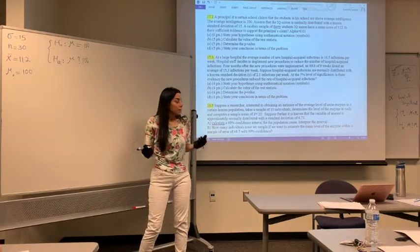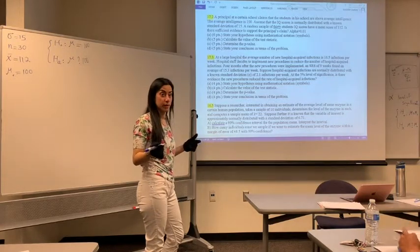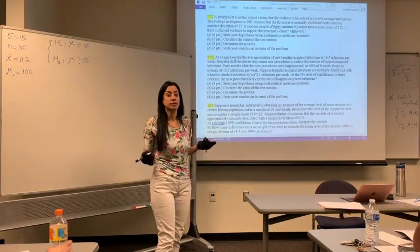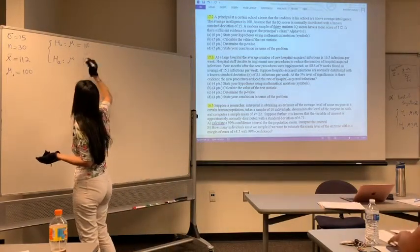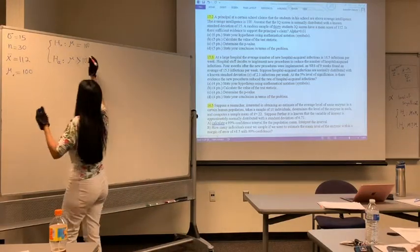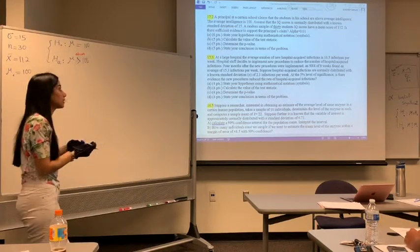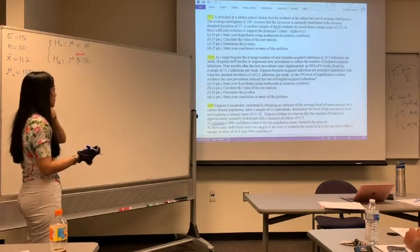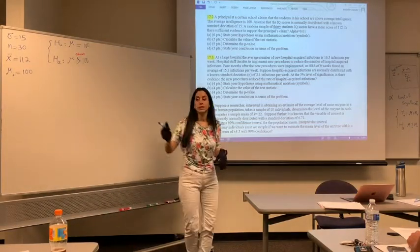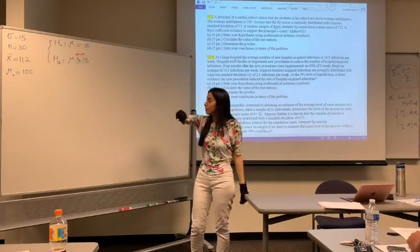We don't know the sign for the alternative yet. The problem says the principal claims that the average intelligence is above 100 — meaning more than 100. We are here to check his claim, to see if we have enough evidence to support it. So the sign for the alternative would be greater than 100. The principal claims students in his school are above average intelligence, and we will check that claim by stating our hypothesis using mathematical notation.